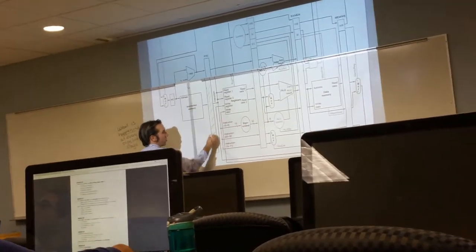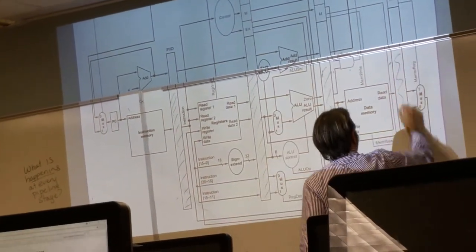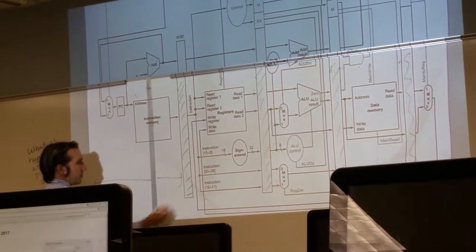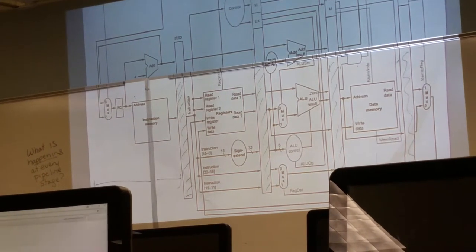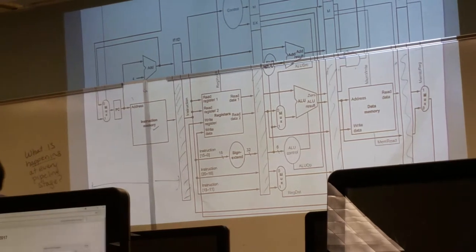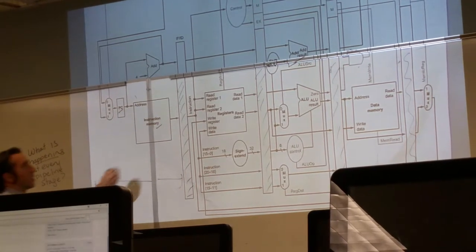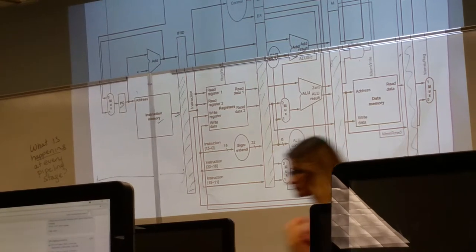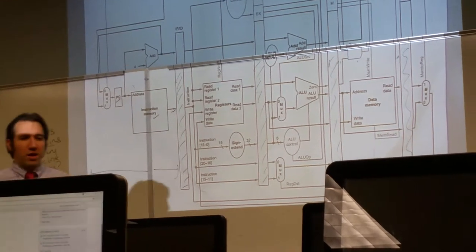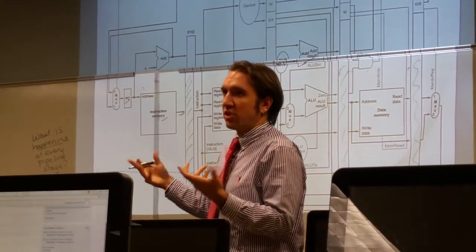Pipeline stages are always separated by registers. So if I look at just this first stage, what do we see visually in this first stage? So I see instruction memory, I see PC, and I see an output that is heading into those registers, or ID.